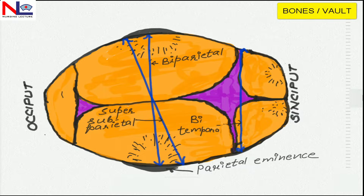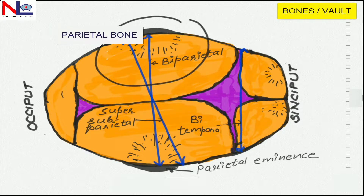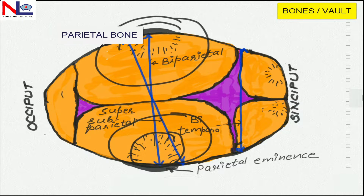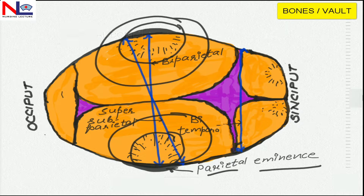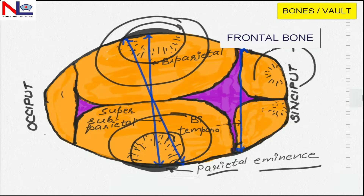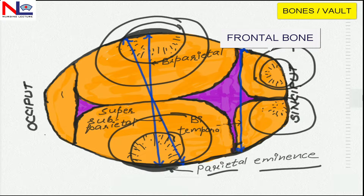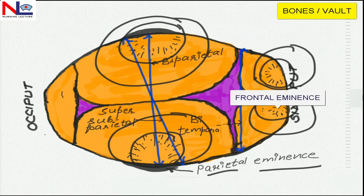To have a look at the other bones, we have to see in a superior aspect. There are two parietal bones, which lie on either side of the fetal skull. At the center of each is an ossification center, termed as parietal eminence. Anterior to that are the two frontal bones, and again there is an ossification center in the middle termed as frontal eminence.